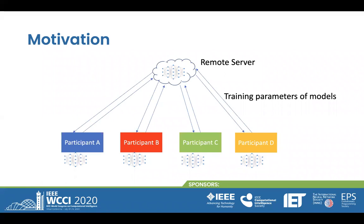To begin, I'd like to share with you the traditional federated learning proposed by Google. Instead of uploading local traffic data to a central server, federated learning allows participants to initialize and train a machine learning model using their local datasets. Through uploading parameters of these trained models, the central server conducts aggregating functions to generate a global model for intelligence sharing among participants.